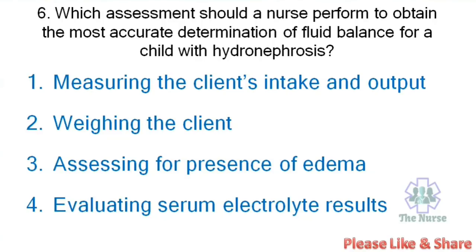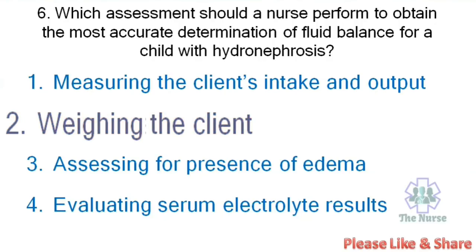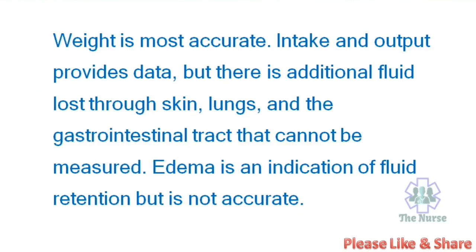Next question: Which assessment should a nurse perform to obtain the most accurate determination of fluid balance for a child with hydronephrosis? Options: Measuring intake and output, weighing the client, assessing presence of edema, or evaluating serum electrolyte results. Correct answer: Weighing the client. Weight is the most accurate. Intake and output provides data but there is additional fluid loss through skin, lungs, and the GI tract that cannot be measured. Edema is an indication of fluid retention but is not accurate.